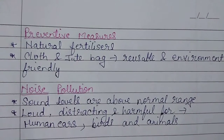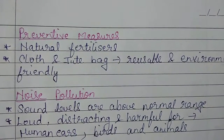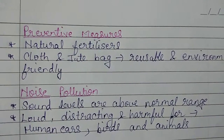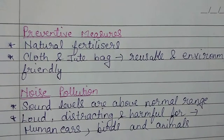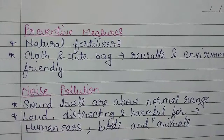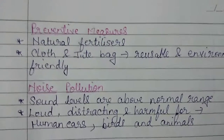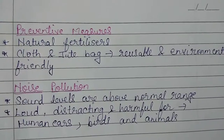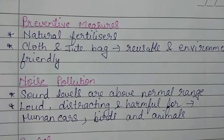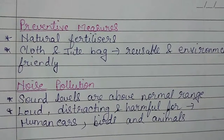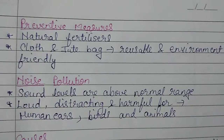The first preventive measure is using only natural fertilizers for plants. Second, the usage of cloth and jute bags should be encouraged as they are reusable and environment friendly. We should not use plastic bags or anything made of plastic, as plastic also causes land pollution.